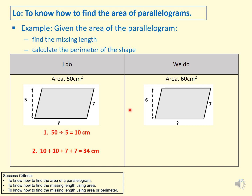Same thing again — you have the area and one of the lengths, so find the other by dividing 60 by 6, which gives a base of 10 cm. Then for the perimeter, start from one corner, go around the shape, and add up everything to find the perimeter of the parallelogram. The unit for perimeter is centimetres. Well done if you managed to do it right.